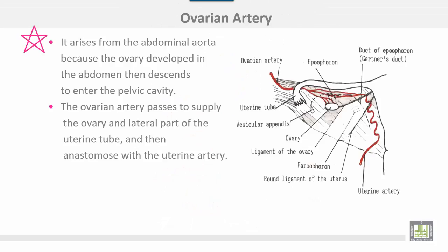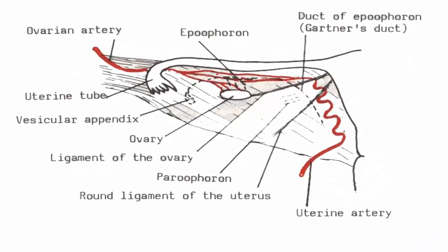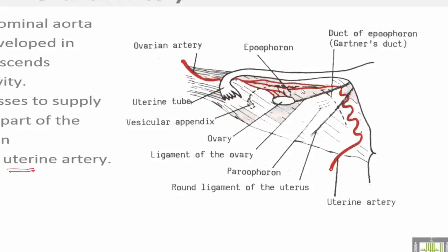The ovarian artery arises from the abdominal aorta because the ovary develops in the abdomen and then descends to enter the pelvic cavity. The ovarian artery passes to supply the ovary and the lateral part of the uterine tube, then continues to anastomose with the uterine artery. This is the uterine artery, and this is the anastomosis between the ovarian and uterine arteries.